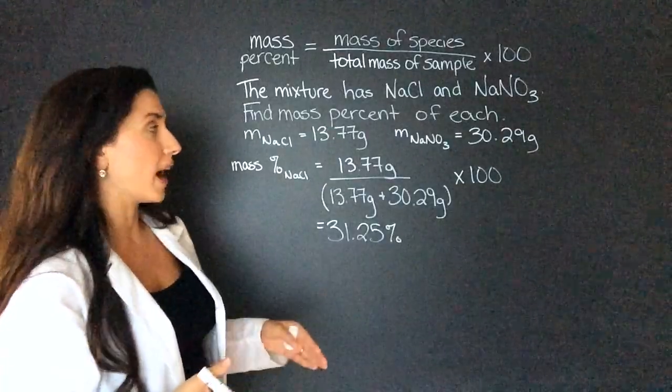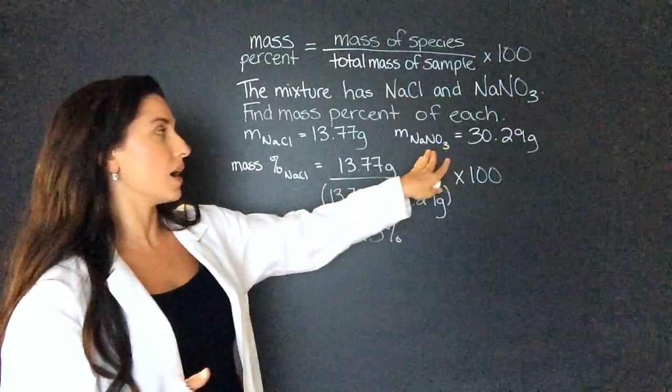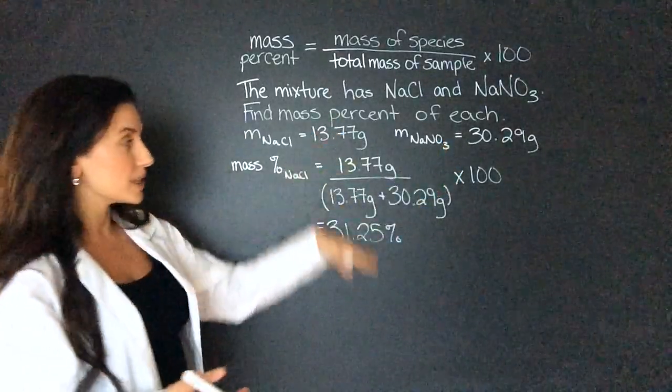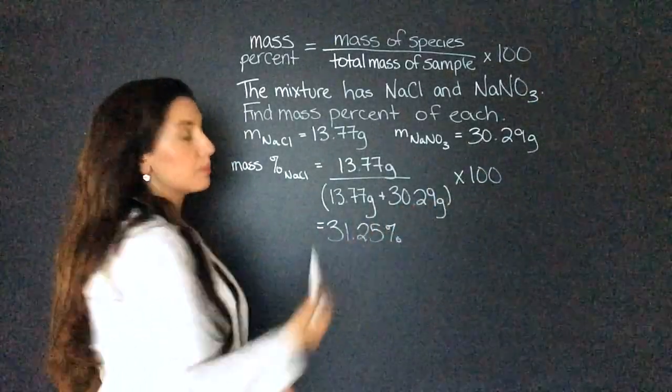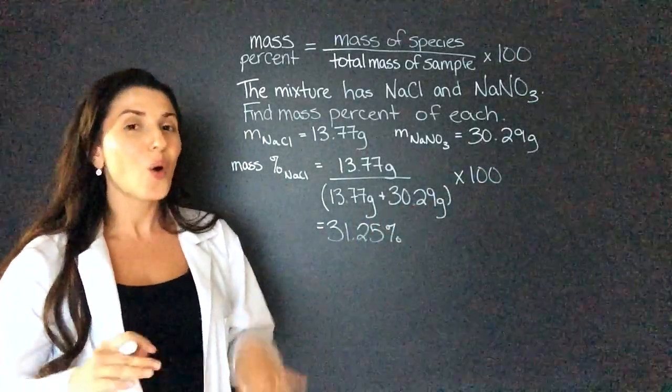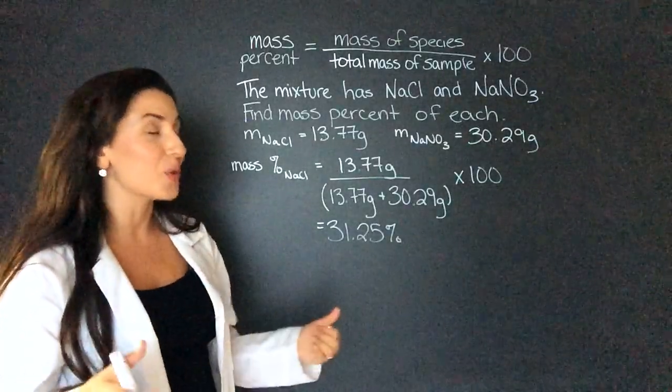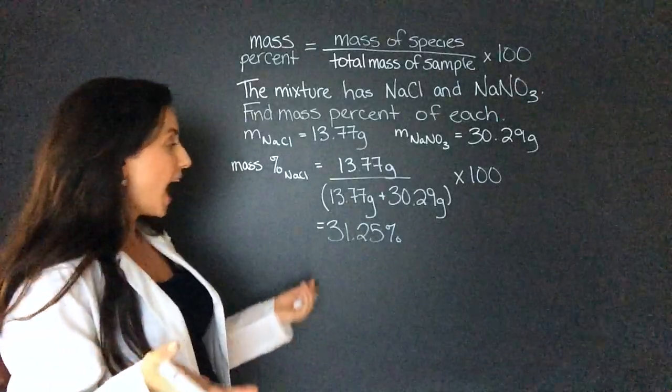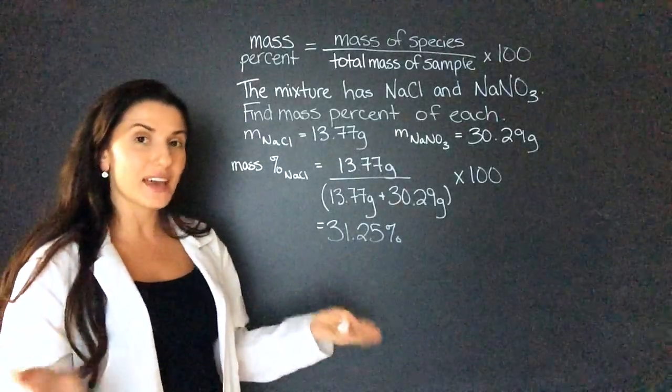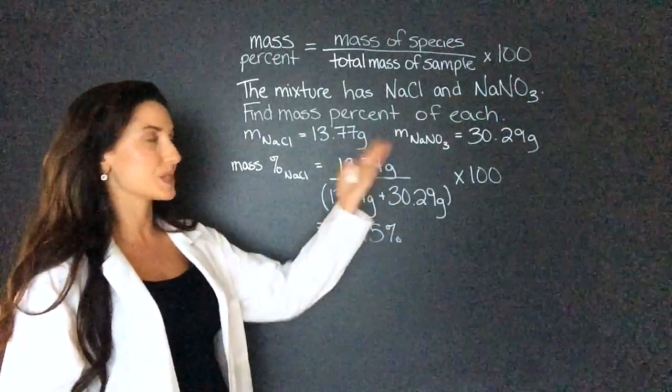Now there are two ways I can find the mass percent of sodium nitrate. I can do this exact same thing again, where I divide the mass by the total mass and multiply it by 100, or since I know that the total mass percent has to equal 100, I can just subtract this percent from 100 and find the mass percent of